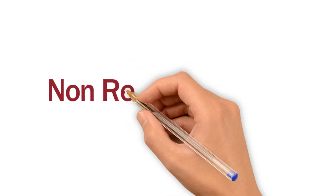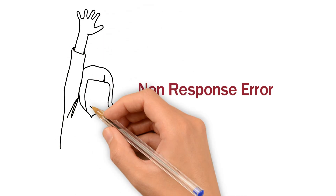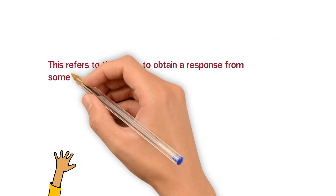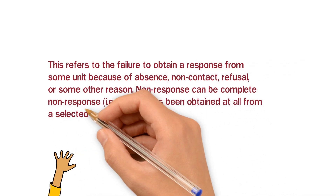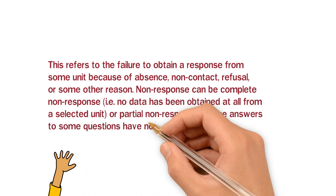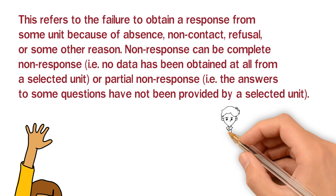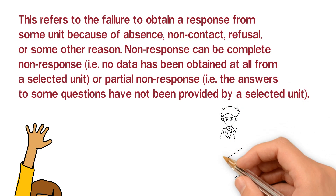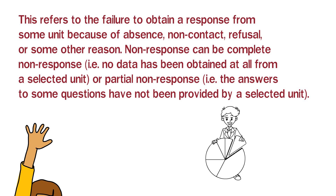After that, we have non-response error. This refers to the failure to obtain a response from some unit because of absence, non-contact, refusal, or some other reason. In non-response error, what happens is that after we circulate our survey and start our research, some people who were part of our sample could not give us results due to any reason — they were absent, could not be contacted, or refused to respond. In that case, the error we get is called non-response error.